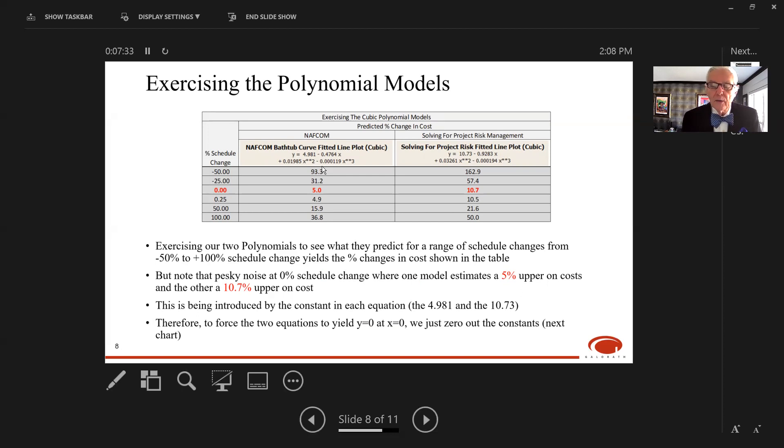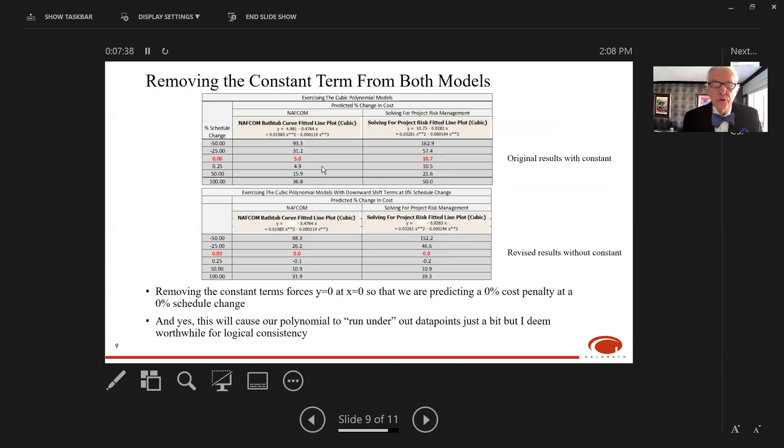Therefore, to force the two equations to yield Y equals zero at X equals zero, we just zero out the constants. The top part of this chart is the same data from before. On the bottom, I've painted over the constant term in both equations. In the Excel spreadsheet, I entered the polynomial without the constant, bringing both curves down by five and 11 percent respectively. Removing the constant forces Y equals zero at X equals zero, predicting zero percent cost penalty at zero percent schedule change. I'll admit this causes our polynomial to run under the data points just a bit, but that's worthwhile for logical consistency.